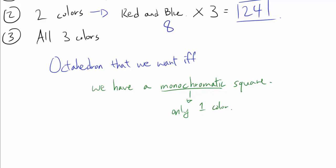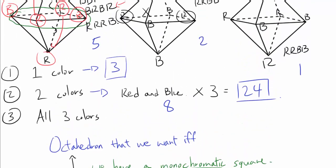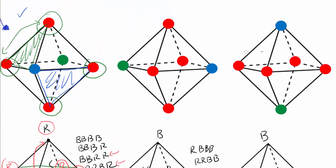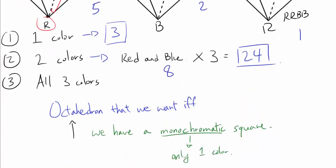Let's prove both directions. First, if we have a monochromatic square, then we have the octahedron we want — this is the easier direction. If the four equatorial vertices share one color, then every triangular face contains two vertices from that square, so every face has at least two vertices of the same color.